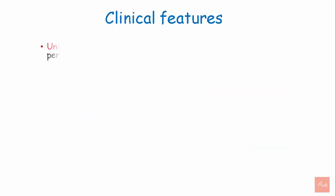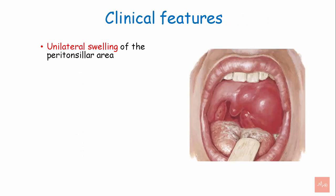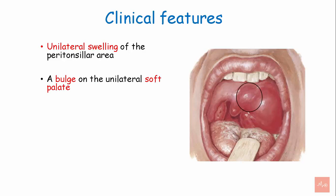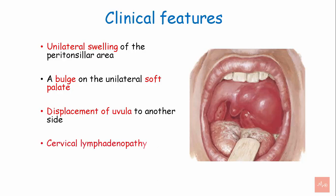Clinical features. There is unilateral swelling of the peritonsillar area, with a bulge on the unilateral soft palate. Displacement of the uvula to the other side is observed. Cervical lymphadenopathy and limited mouth opening, that is trismus of the muscles, are also seen.